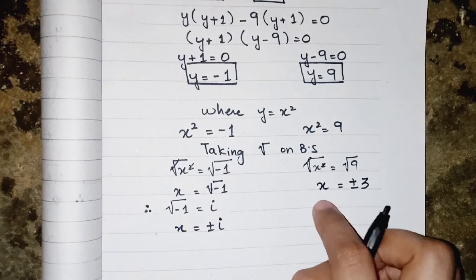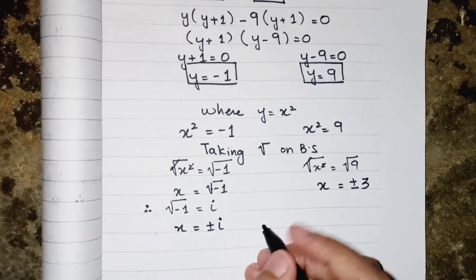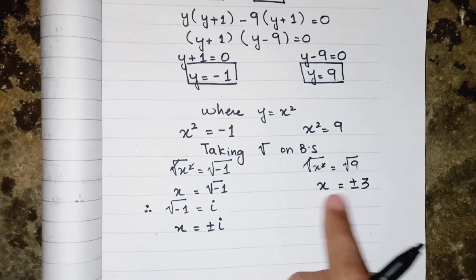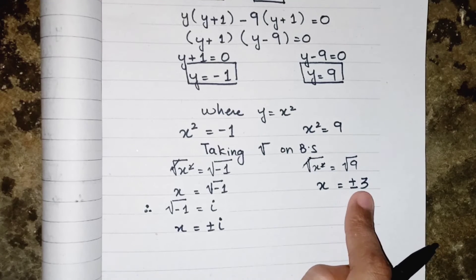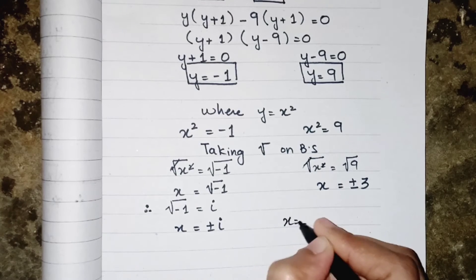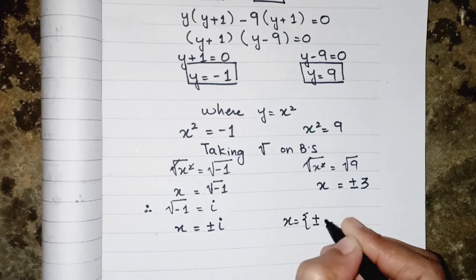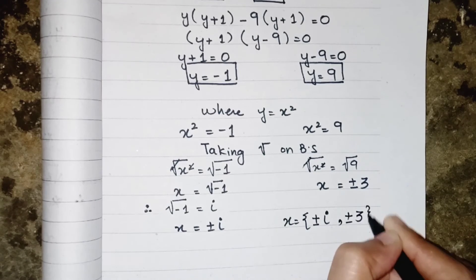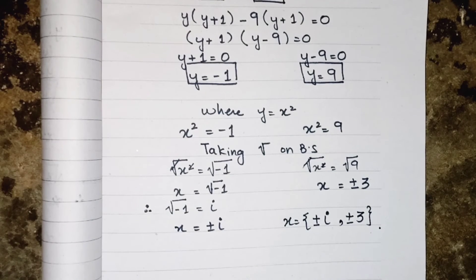So we have four values of x: number 1 is +i, number 2 is −i, number 3 is +3, and number 4 is −3. We can write the solution set as x = ±i, ±3. Hope you like the video — please subscribe to the channel to support me for more videos. Take care, bye bye!